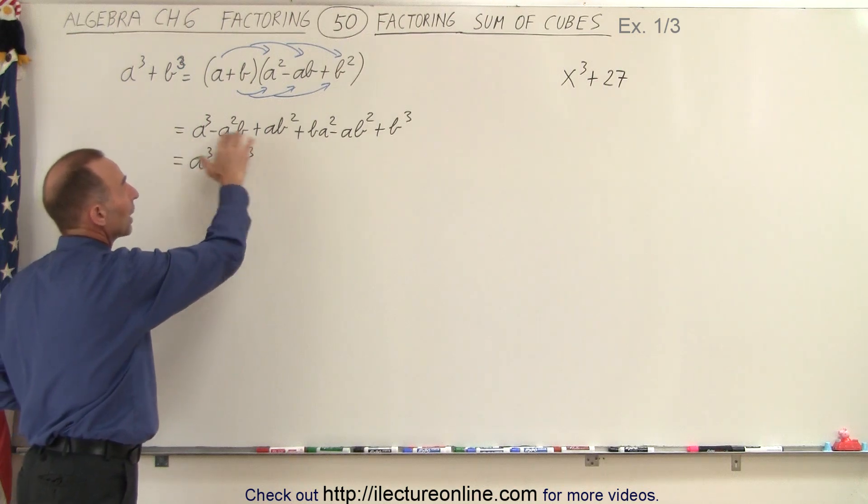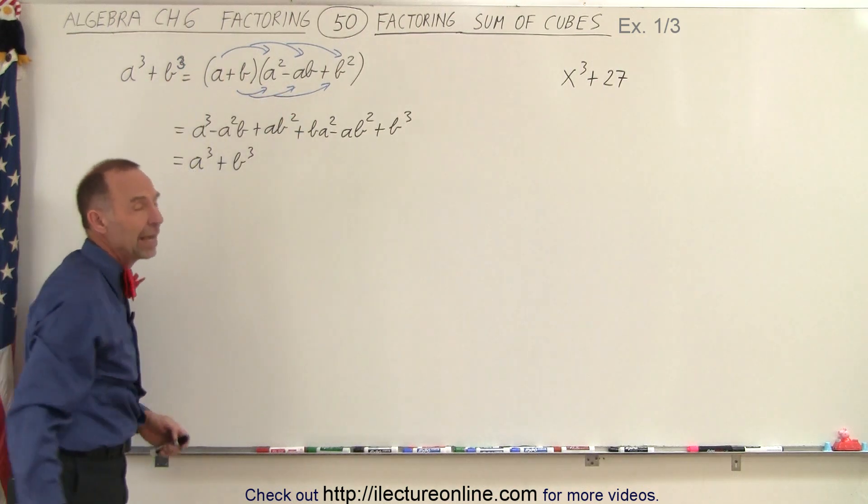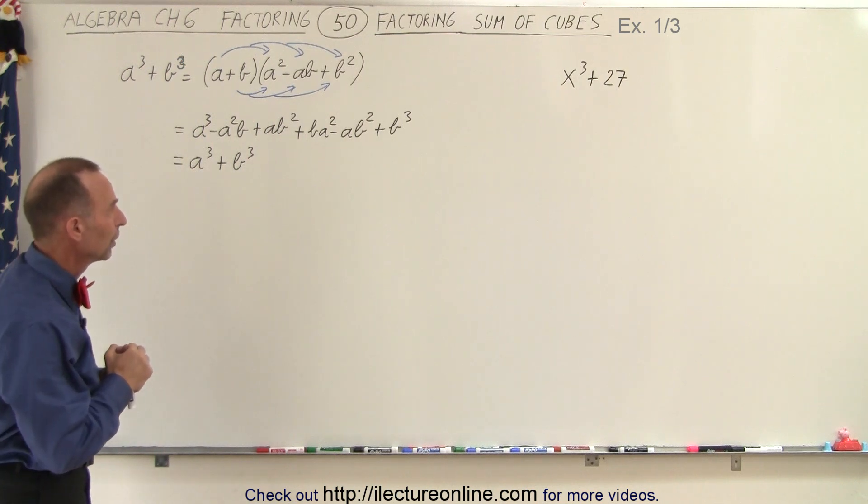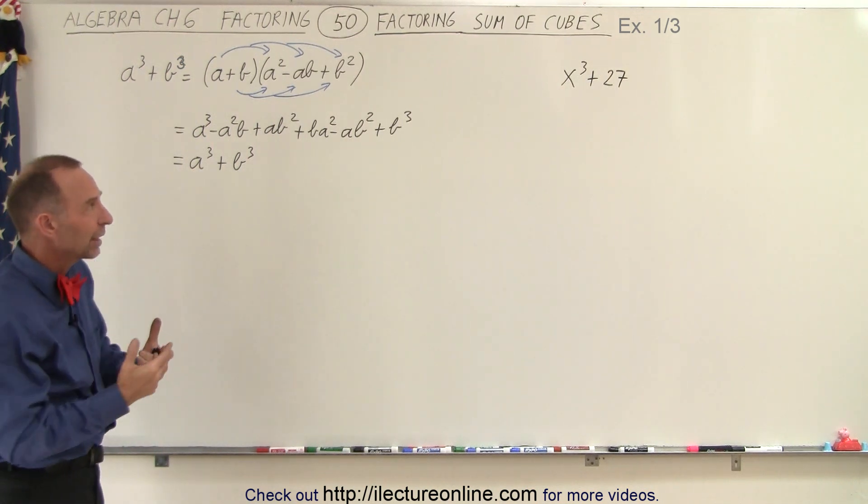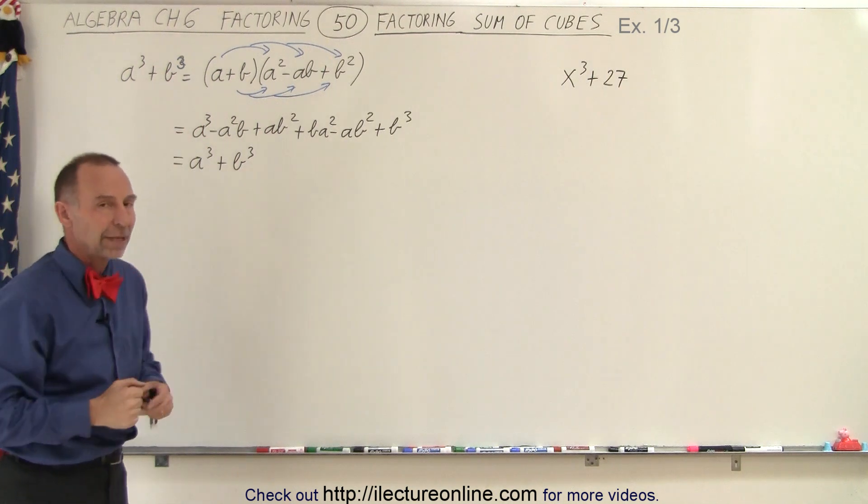So indeed, that is the proper and correct factored form of a cubed plus b cubed, which means that we have something that looks like the sum of cubes. We can then factor it using the very same technique.